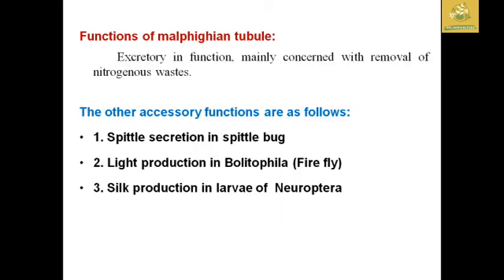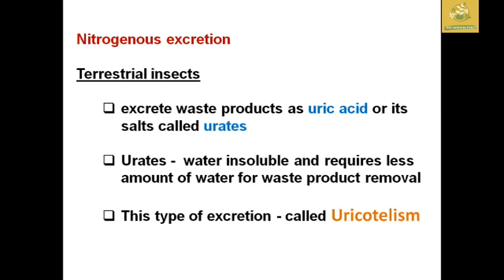The main function of the Malpighian tubules is excretion — primarily the removal of nitrogenous waste from the body. Other accessory functions performed by Malpighian tubules in different insects include: silk secretion in Spittle bugs, light production in Photuris (firefly), and silk production in larvae of Neuroptera.